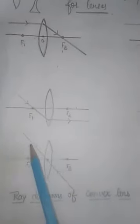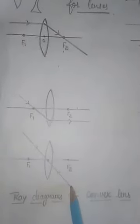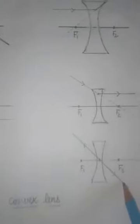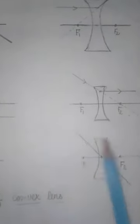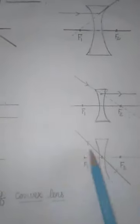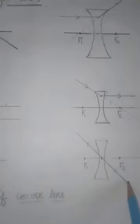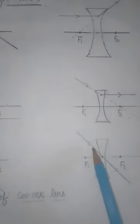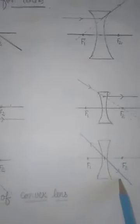The third rule states that a ray passing through the optical center of the lens passes straight through without bending. In the concave lens as well, a ray coming through the optical center passes through on the same path.